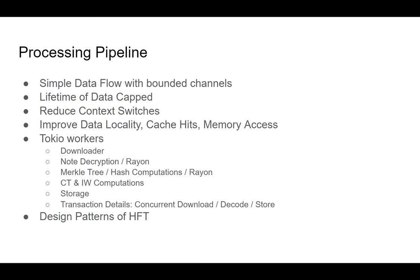So how does all this fit together? For synchronization, the main issue was hash maintenance — commitment tree maintenance and incremental witness maintenance. What we have is a very simple forward flow where the data goes through channels. It's a pipeline of different workers, each with bounded capacity, and the flow is always forward. With this flow, we know how much memory we need — it's just the sum of each worker's memory usage and the capacity of the channels.